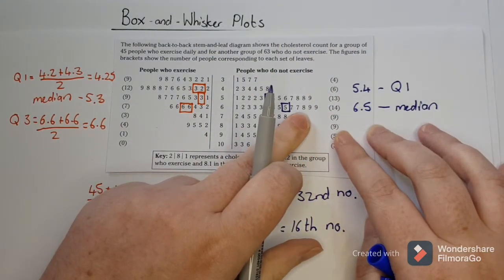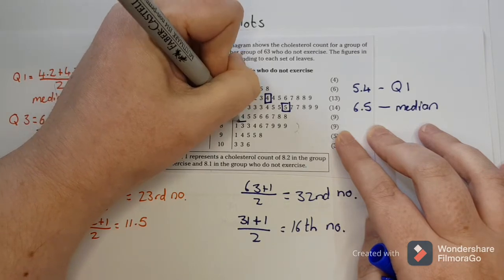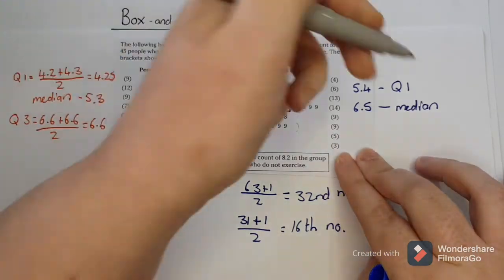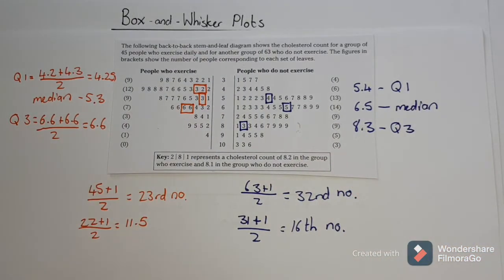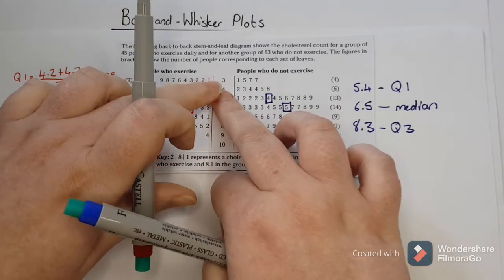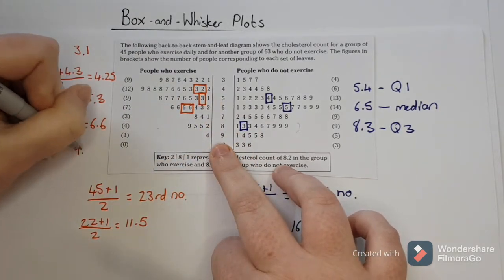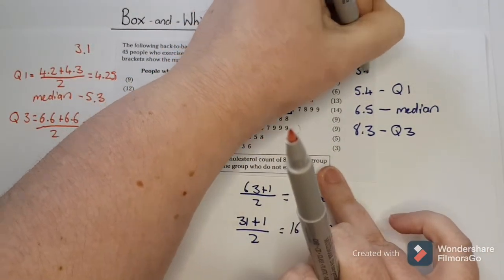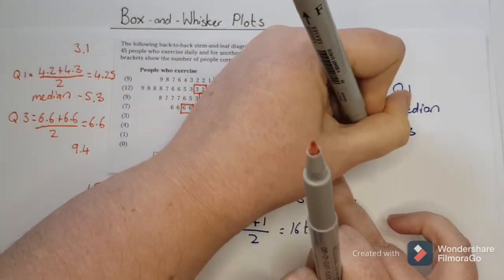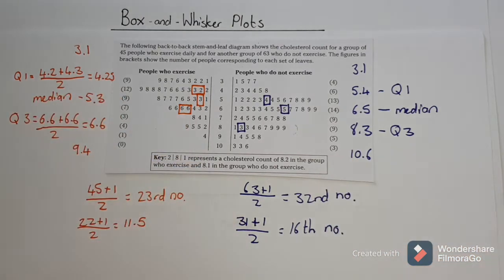And then after the median I'm looking for the 16th number again. Counting them all the way through I find my 16th number there, so that is going to be 8.3 as the Q3. So now I've got my medians and my quartiles. I can simply read the lowest number and the highest number from the stem and leaf. On this side the lowest number is 3.1 and the highest is 9.4, and on the other side the lowest is also 3.1 and the highest is 10.6.